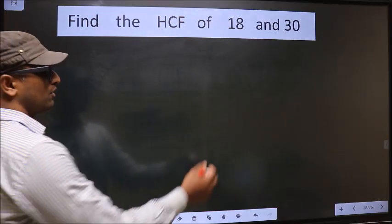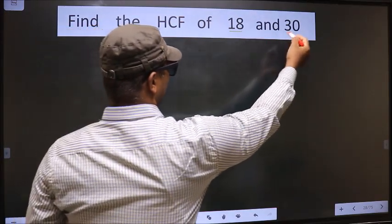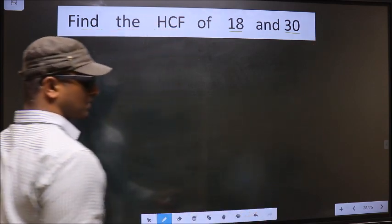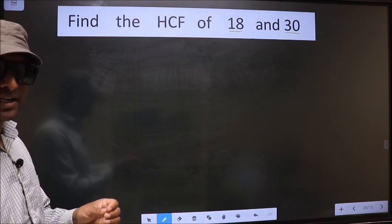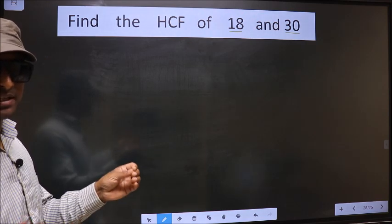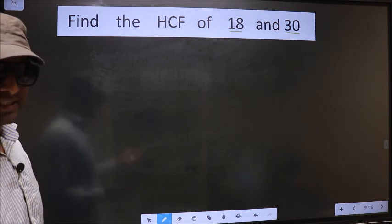Find the HCF of 18 and 30. To find the HCF, first we should do the prime factorization of each number separately.